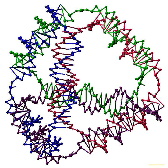Another use of strand displacement cascades is to make dynamically assembled structures. These use a hairpin structure for the reactants, so that when the input strand binds, the newly revealed sequence is on the same molecule rather than disassembling, allowing new opened hairpins to be added to a growing complex. This approach has been used to make simple structures such as three- and four-arm junctions and dendrimers.